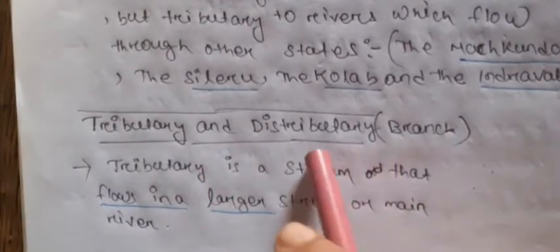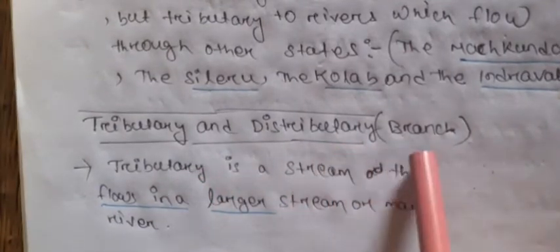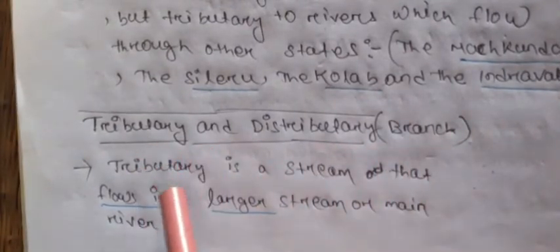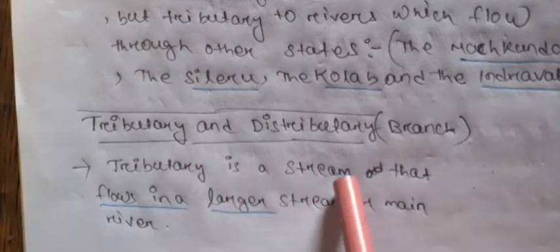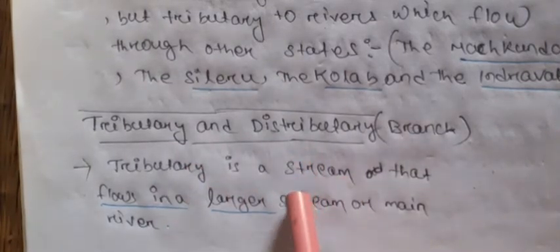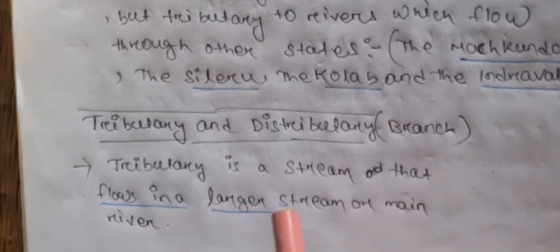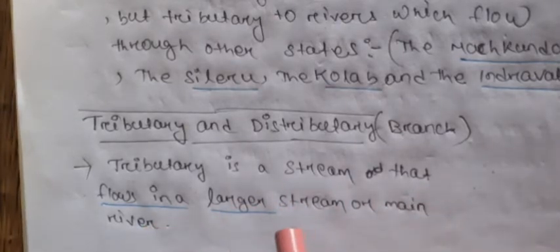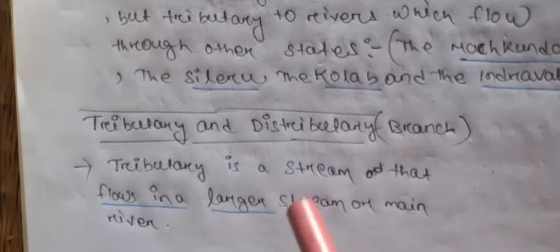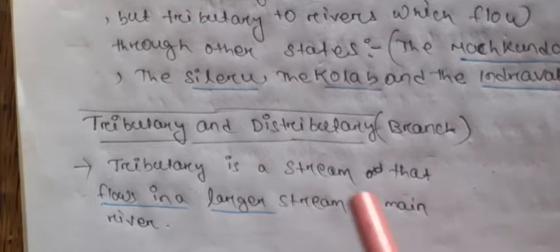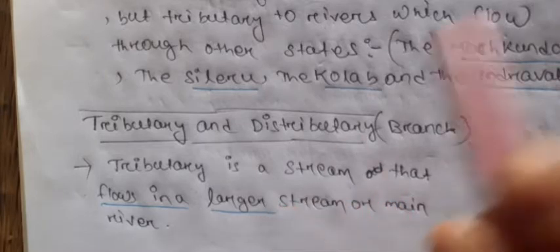We should know what is a tributary and a distributary. A distributary is also known as a branch. A tributary is a stream or river that flows into a larger stream or main river — it is a part of the main river and gives water to the main river.